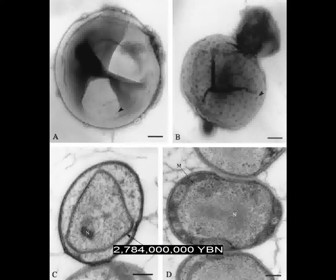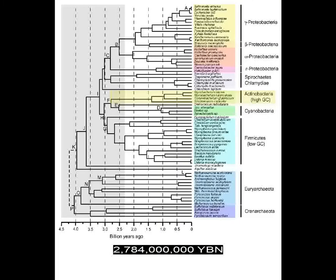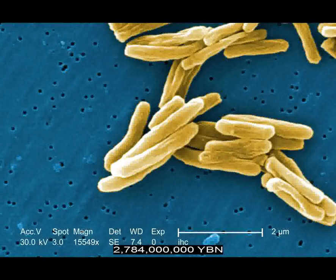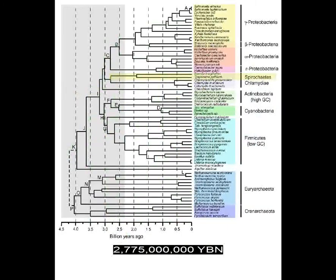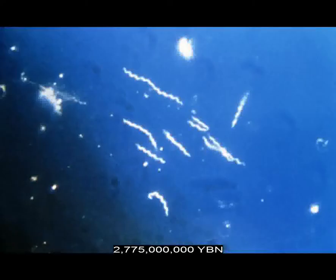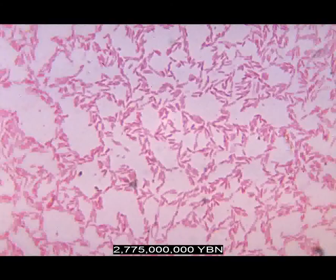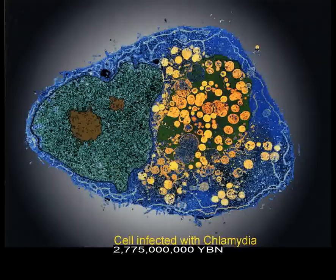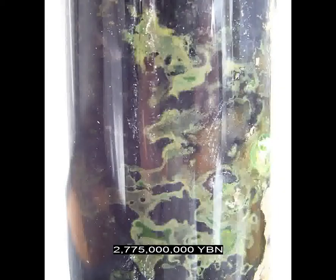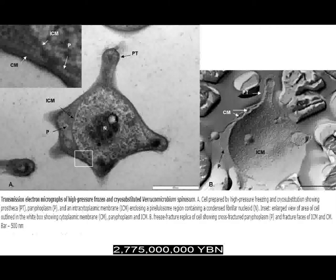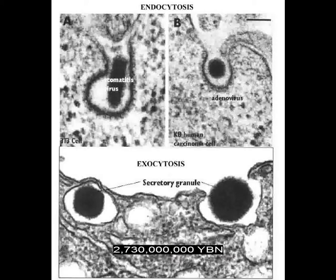The eubacteria phylum Planktomycetes evolves. The eubacteria phylum Actinobacteria evolves—the source of streptomycin and cause of tuberculosis and leprosy. The eubacteria phylum Spirochetes evolves—the cause of syphilis and Lyme disease. The eubacteria phyla Bacteroidetes, Chlamydiae, Chlorobi—green sulfur bacteria—and Verrucomicrobia also evolve. Endo- and exocytosis evolve: cells can now eat other cells. Endocytosis is a process of cellular ingestion by which the plasma membrane folds inward to bring substances into the cell. Exocytosis is cellular secretion in which substances in vesicles are released by fusion of the vesicle membrane with the outer cell membrane.